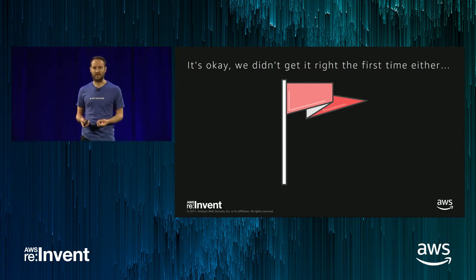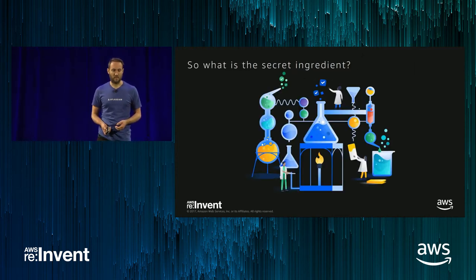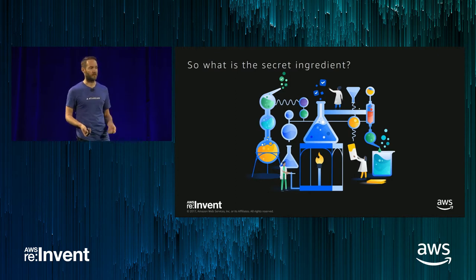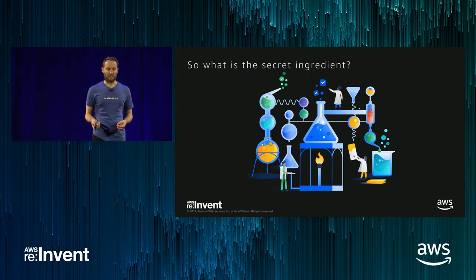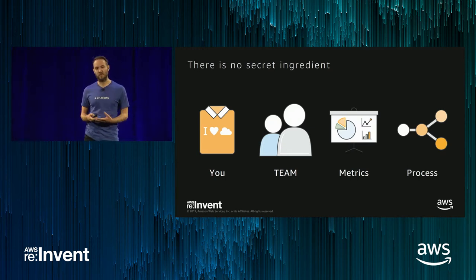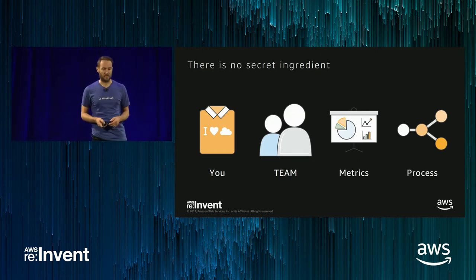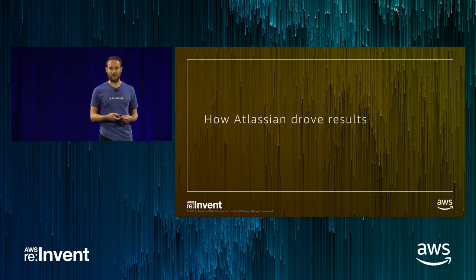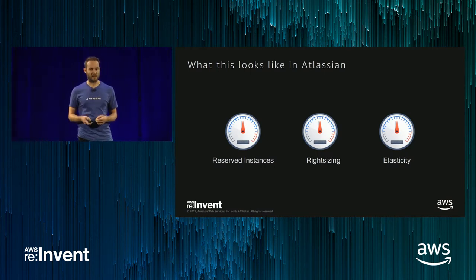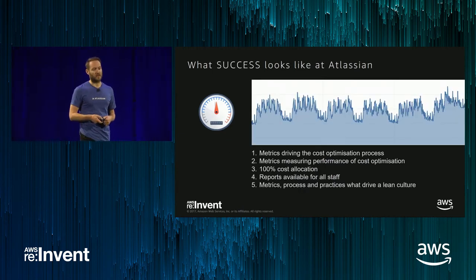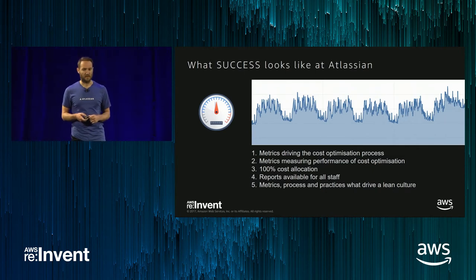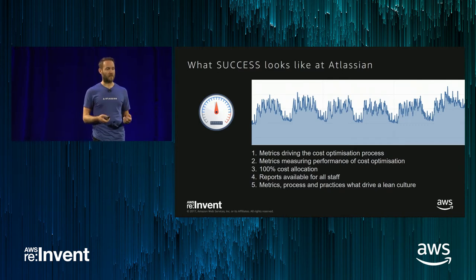There was one thing we were definitely certain of: we needed to get better at cost optimization. If you're in the room today, don't fear — we didn't get it right the first time either, and you can turn it around. The reality is there's no single secret ingredient. It's around you and your team, the metrics you're using to drive your cost optimization, and the processes you're deploying around your organization. I'll talk about how we drive results today using metrics in reserved instances, right-sizing, and elasticity — showing what success looks like at Atlassian.